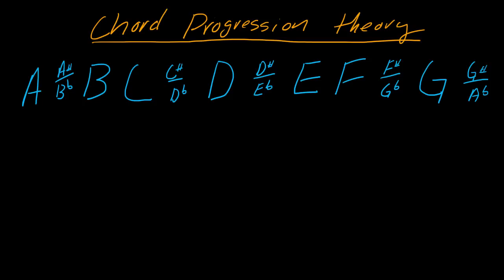In the number system, there are chords ranging from one through seven. Chords one, four, and five are by default major chords.